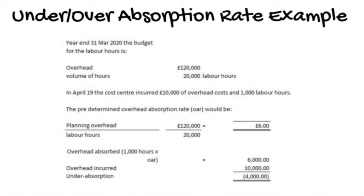The predetermined overhead absorption rate or OAR would be £120,000 divided by 20,000 labour hours which gives £6. We've actually incurred £10,000 of cost. If we look at the overheads we've absorbed, the budgeted version, we take that £6 and times that by the 1,000 labour hours giving us expected costs of only £6,000. Which means that we underabsorbed, we underbudgeted by £4,000.